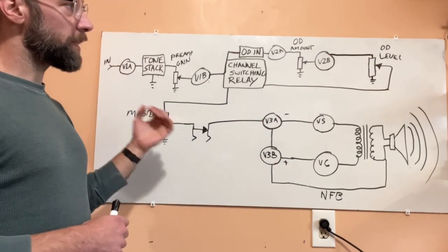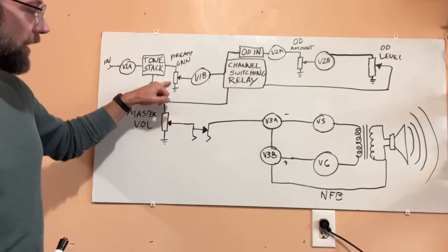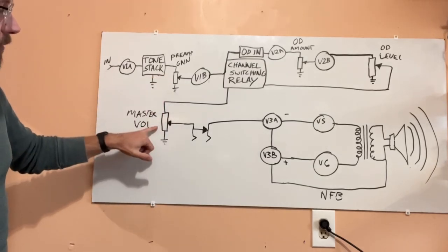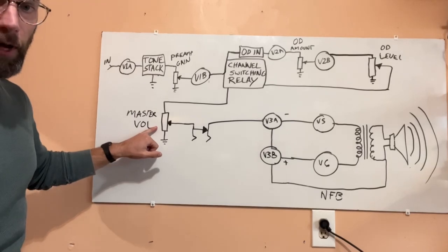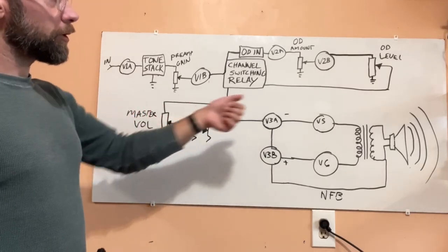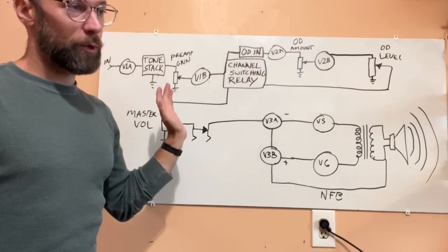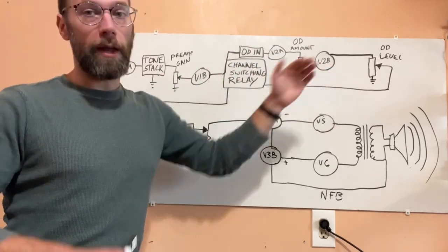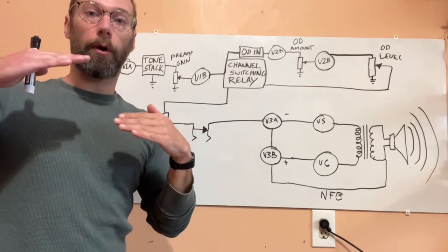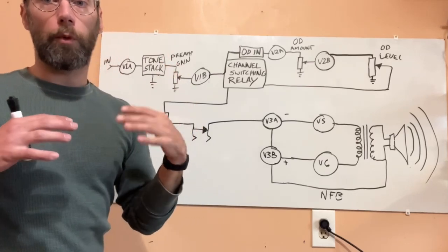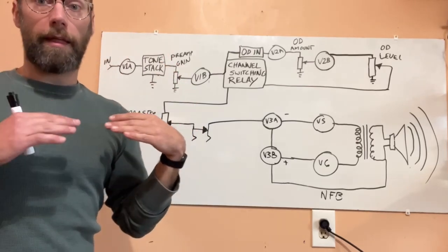Because the way you set this amp up is essentially you set this knob first and then your output volume for the clean channel is right here. And then you turn on your overdrive, you set the amount of drive you want, and then you can switch back and forth between the two channels to set the ratio or how much louder or quieter you want the overdrive channel to be than the clean channel.